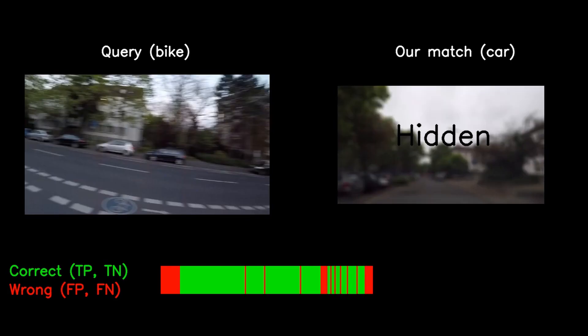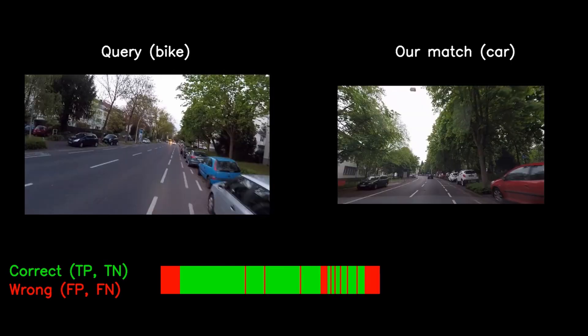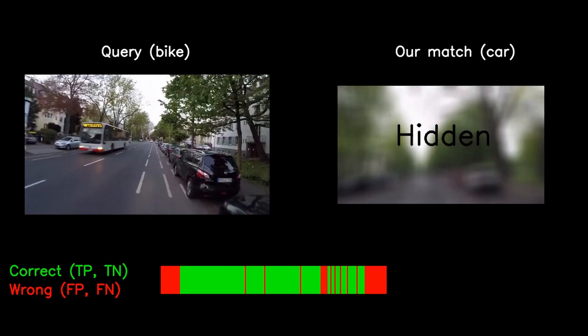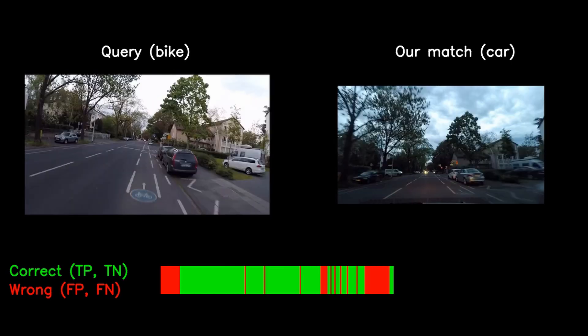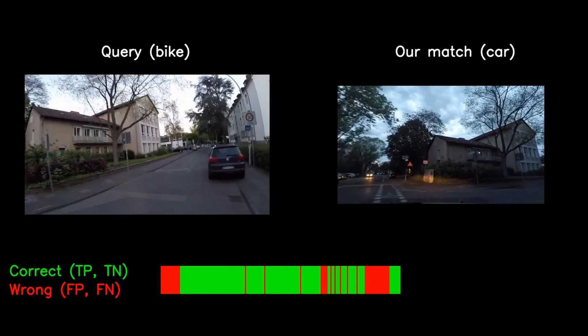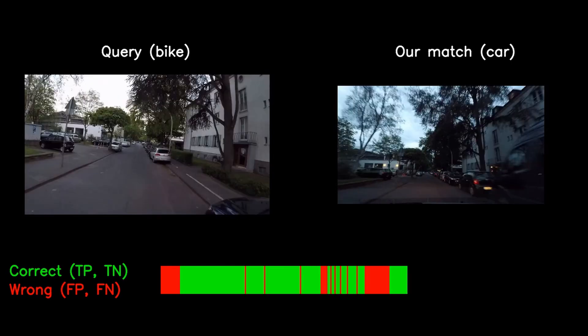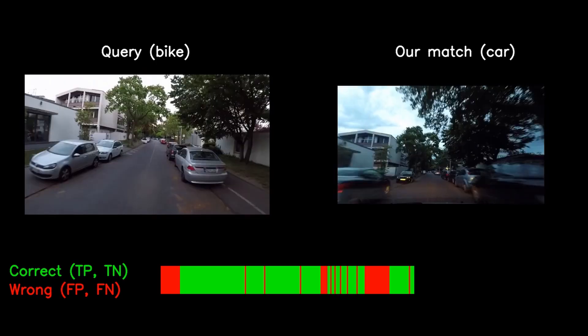Not every hidden match is wrong. If the reference map has never visited a place before, the hidden match is a correct match.